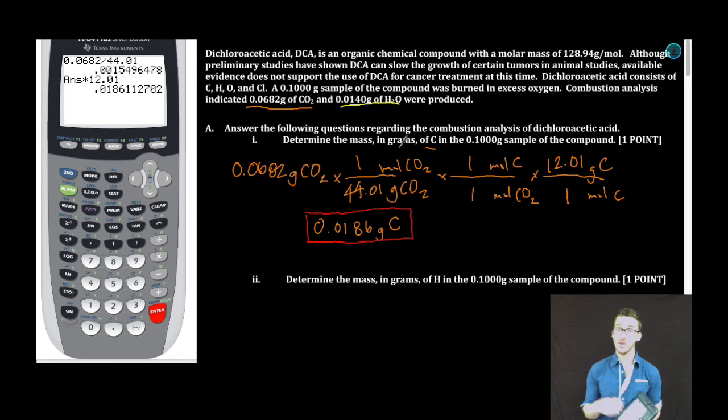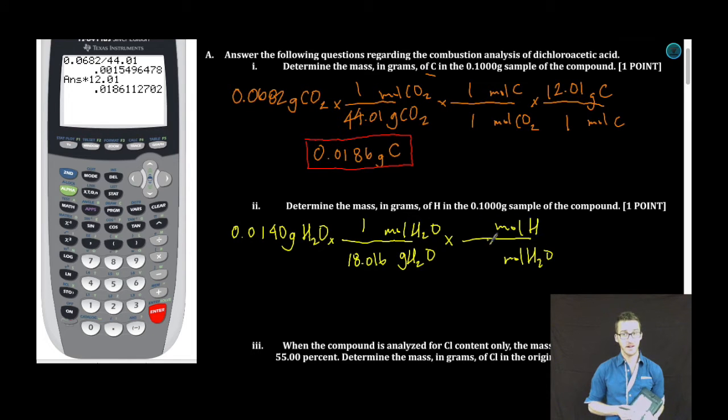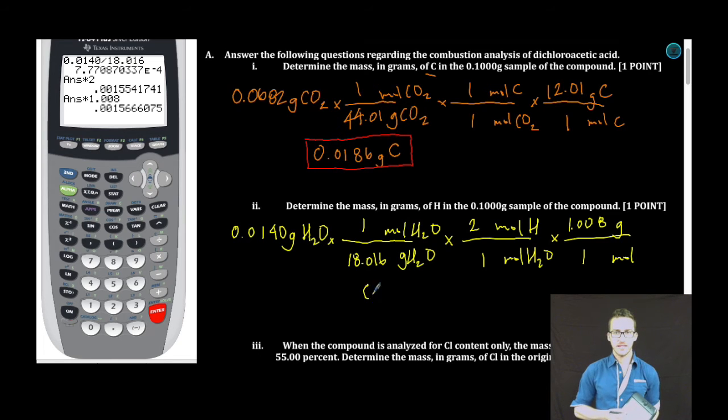The hydrogen in water must have come from the DCA in the combustion. So 0.0140 grams of water. Converting grams to moles. We're now going to compare moles of water to moles of hydrogen. Be careful here. For every one mole of water, there are two moles of hydrogen. And then we'll just convert back using the molar mass on the periodic table. Calculator time. To 3 sig figs, we get 0.00157 grams of hydrogen. Boom.